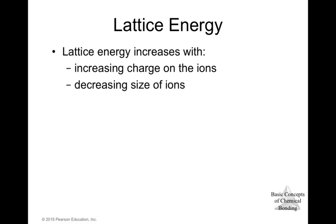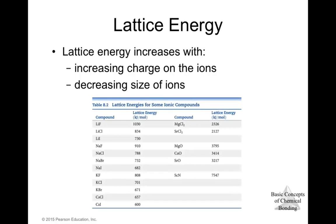The lattice energy increases with increasing charge on the ions and decreasing size of ions. For example, combining lithium with fluorine, chlorine, or iodine — as the anion size increases, the lattice energy decreases. Comparing lithium (+1) with magnesium (+2) bonded to the same anion, increasing the charge increases the lattice energy. So lattice energy increases with higher ionic charge and smaller ionic radius.